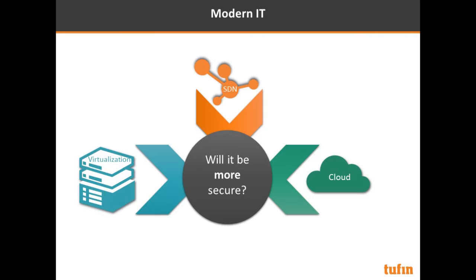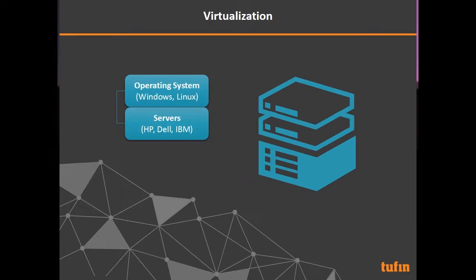Let's talk about modern IT. There are three elements: virtualization, cloud, and software-defined networking. These are the elements that are happening or have recently happened in the industry and together make up what we call modern IT. Everything has to do with networking, and one of the key questions is: will it actually be more secure or less secure in the future?